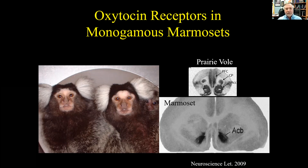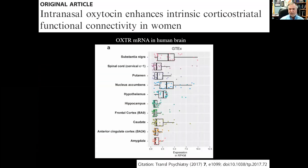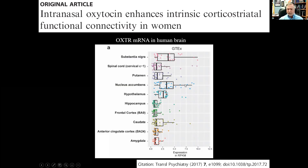What about humans? Are humans monogamous or not? We may be serially monogamous, but we do form bonds. This is transcriptomics data from the GTEx database — each dot represents an individual — showing oxytocin receptor mRNA from human brains. One of the highest levels of expression in the human brain is in the nucleus accumbens. Notice how much individual variation there is in nucleus accumbens oxytocin receptor expression — that may give plasticity in social behavior across humans as well.